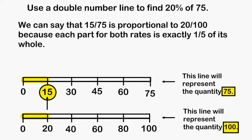So we can see that double number lines are a great way to use equivalent rates to figure out what an unknown value is.